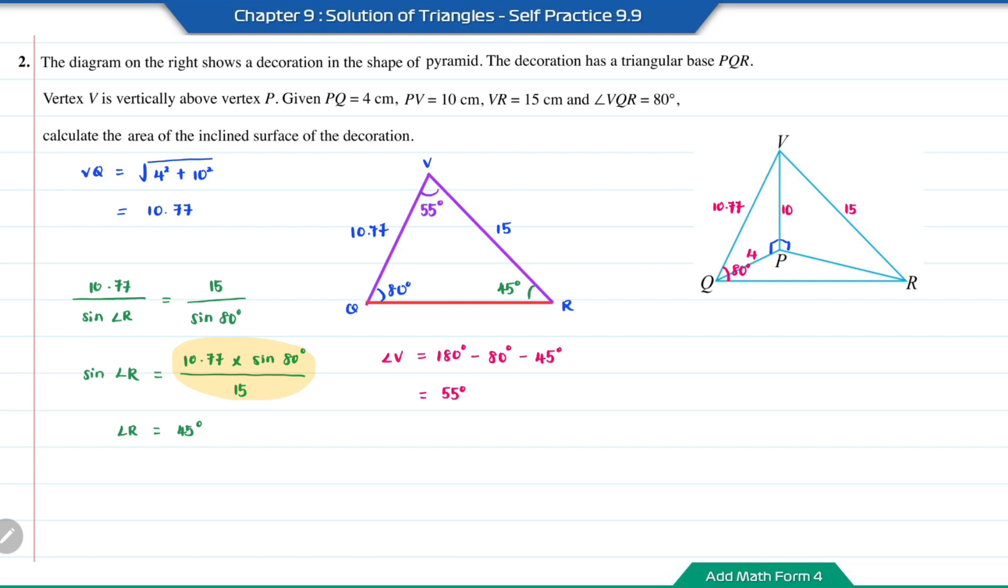Now we have the length of two sides and one included angle. We can find the area of the inclined surface VQR. This equals 1/2 times 10.77 times 15 times sine 55 degrees. The answer is 66.17 square centimeters.